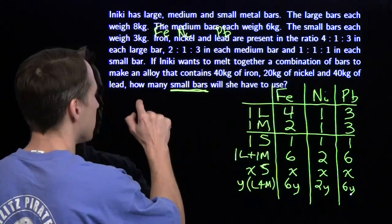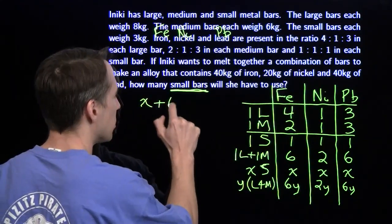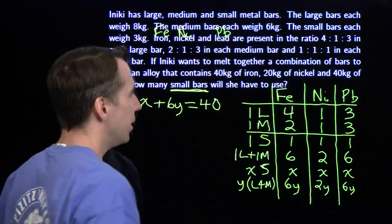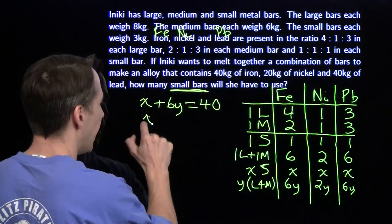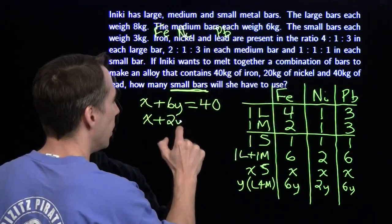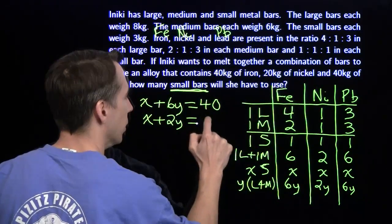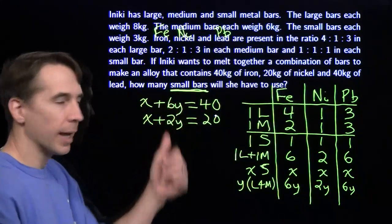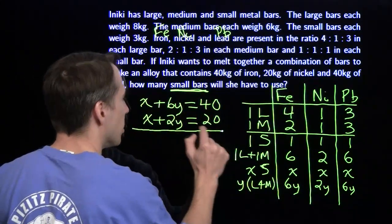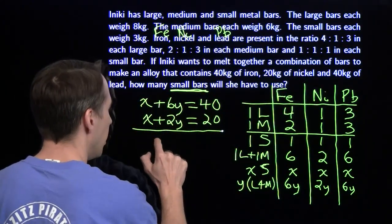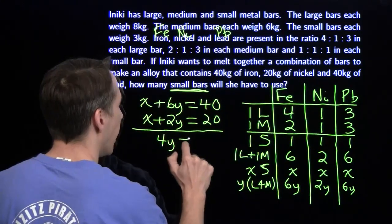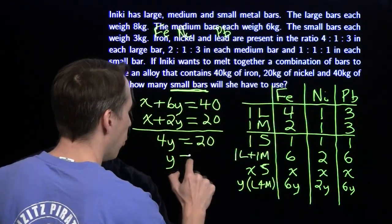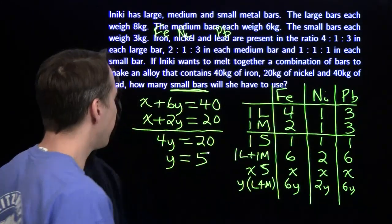For the iron, x + 6y equals 40. For the nickel, x + 2y equals 20. I don't even have to write down anything for the lead because I'll get this equation back. We can handle these equations. We subtract the second one from the first one, we get 4y equals 20. Divide by 4, so y is 5.